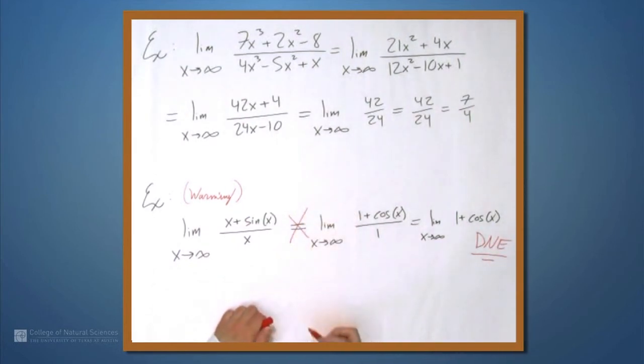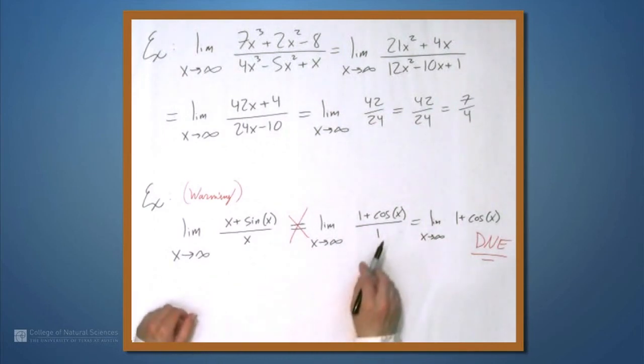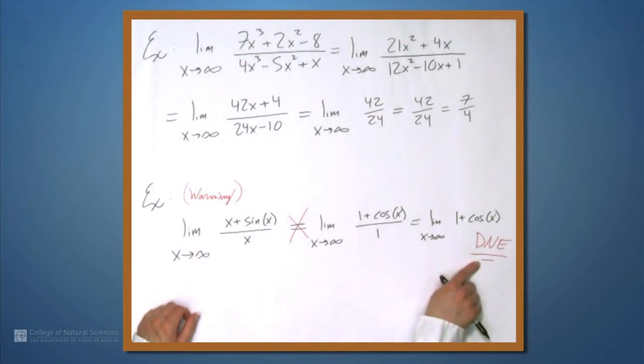So, these two things are not equal. So, realize that when you're applying L'Hopital's rule, you need this second expression, the ratio of the derivatives, to exist, right? This limit must exist. If it doesn't, you can't use it.